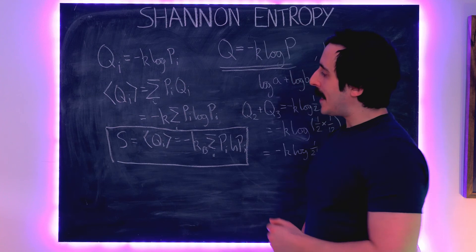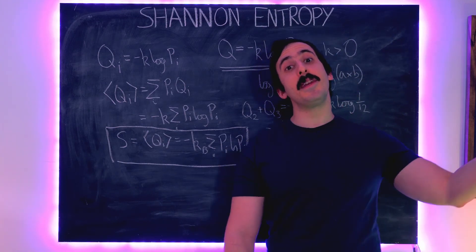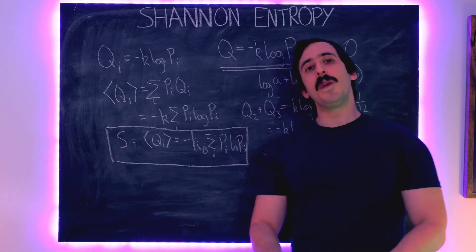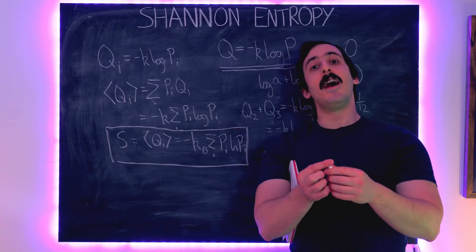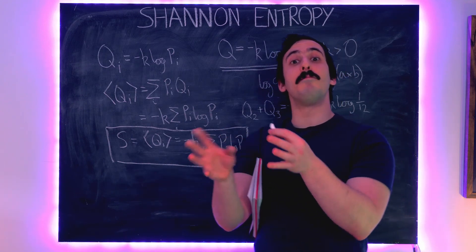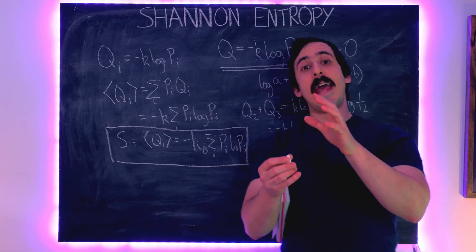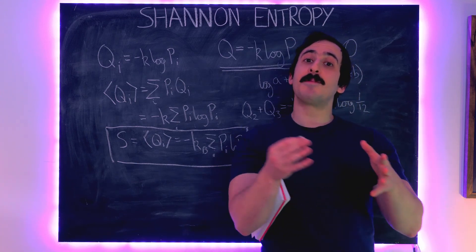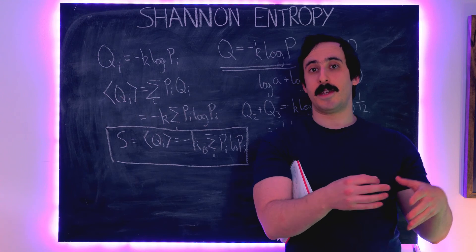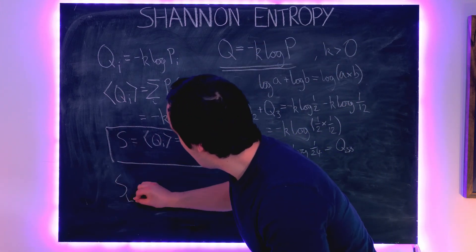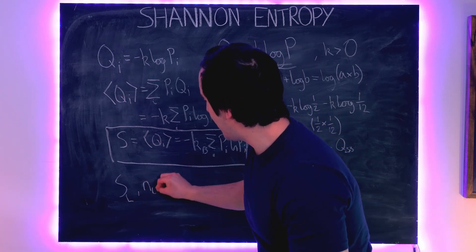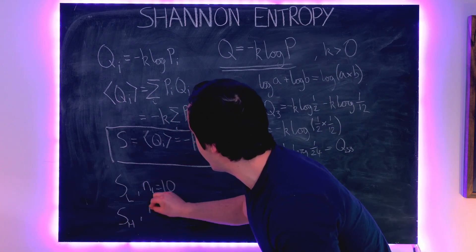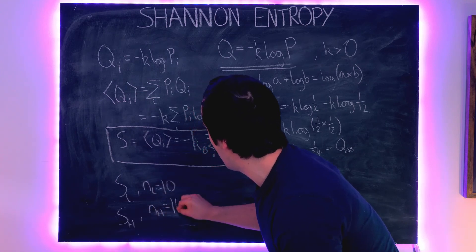Whereas if we have a very low entropy, that means we have a very low expected information content — following a statement, we are unlikely to learn much more. In statistical mechanics, a high entropy state has a very large number of corresponding microstates, while a very low entropy state has far fewer. For example, a low entropy state might have 10 microstates associated with it, whereas a high entropy state might have one million.